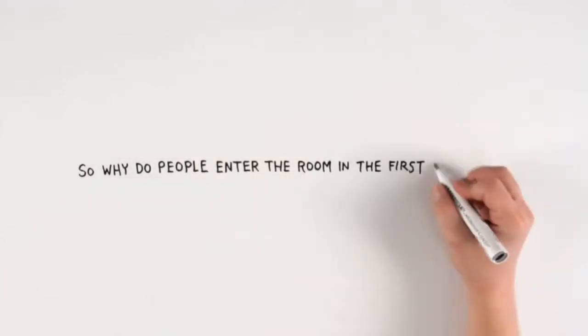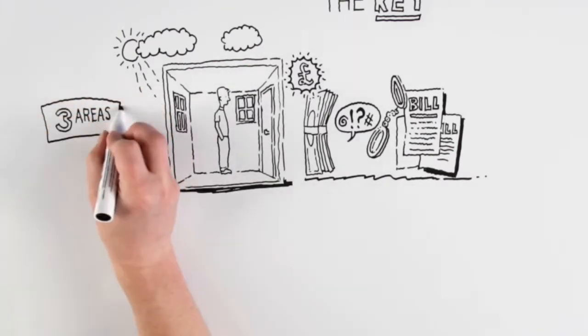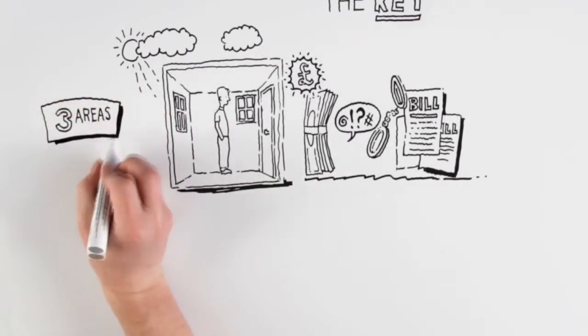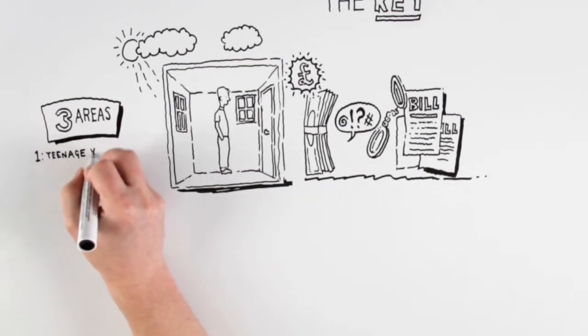So why do people enter the room in the first place? Broadly speaking there are three reasons. They discover the room at a time when they prefer to avoid confrontation, typically this may happen during teenage years when they may be experimenting anyway.